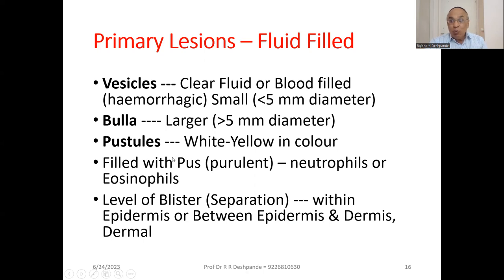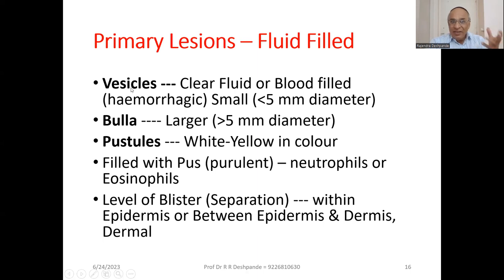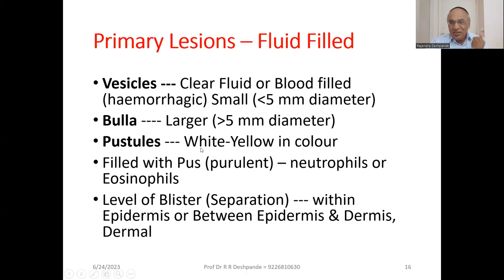Next is bulla — what is the difference between vesicle and bulla? Bulla is greater than 5 millimeters in diameter, so it is larger than a vesicle. Then pustule is different — pustule contains not clear fluid but pus. It may be white or yellow in color, filled with pus, so it is called purulent. Pustules contain neutrophil cells and eosinophil cells.